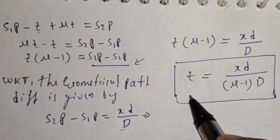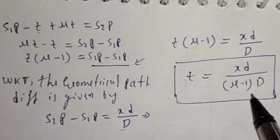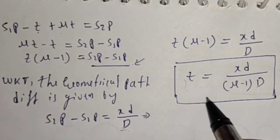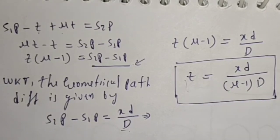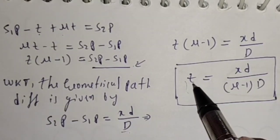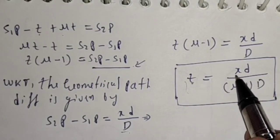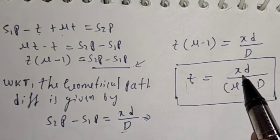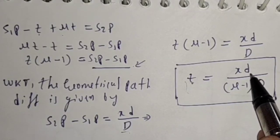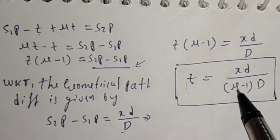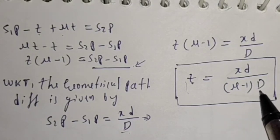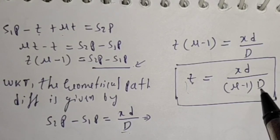From this equation we can calculate the thickness of the thin mica or glass. Here t is the thickness, x is the distance by which the central bright fringe shifts towards P, d is the distance between the two virtual sources, mu is the refractive index of the medium, and D is the distance between the source and screen.